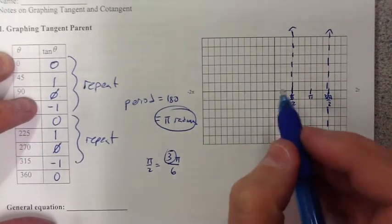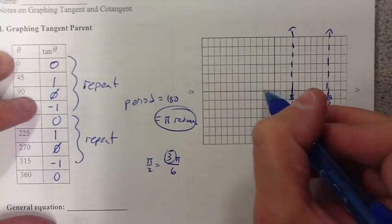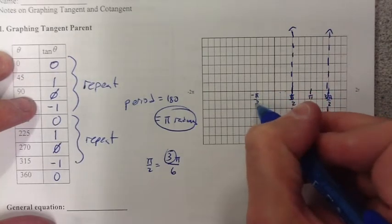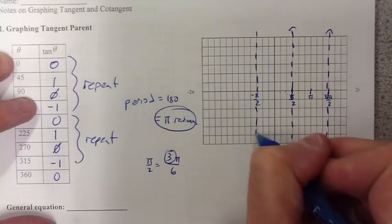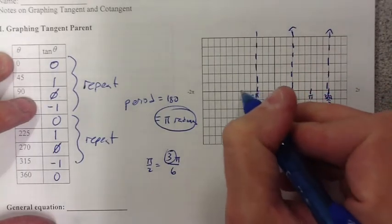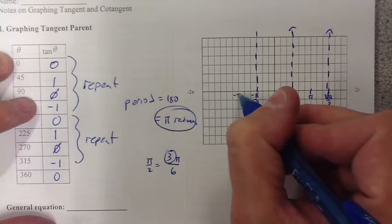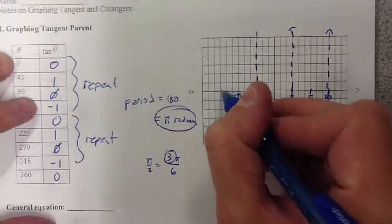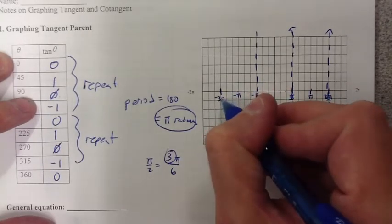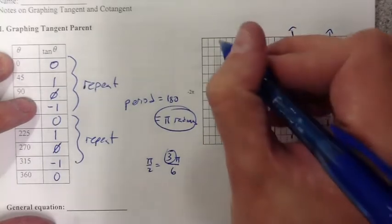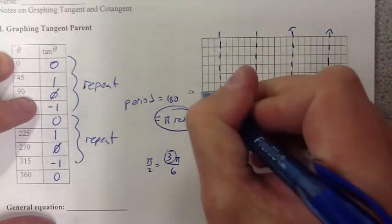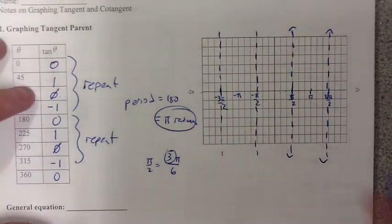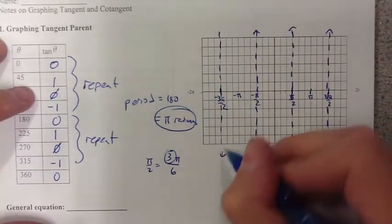We can also go backwards. There's negative π/2, and this is negative π, then negative 3π/2, and here's negative 2π, not an asymptote. So we're going to draw our asymptotes first.